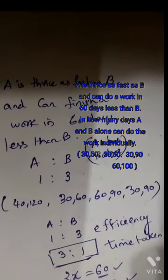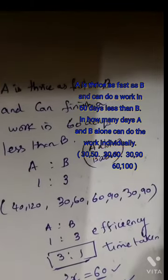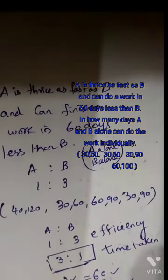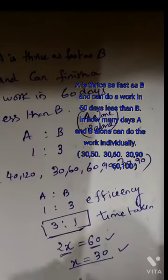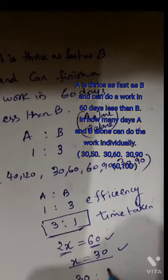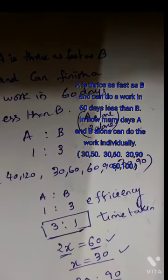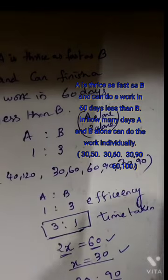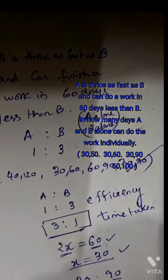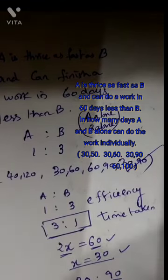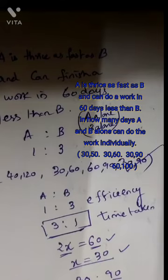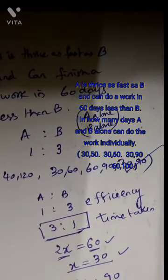With x equal to 30: A takes 1x equals 30 days, B takes 3x equals 90 days. So 30 and 90 are the correct options. A is 30 days and B is 90 days. The key principle: efficiency is the inverse of time taken. Inverse of efficiency gives time taken ratio.